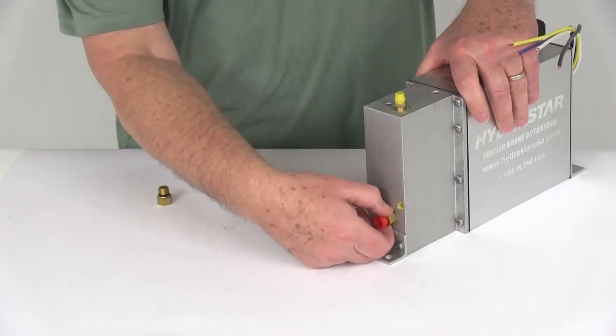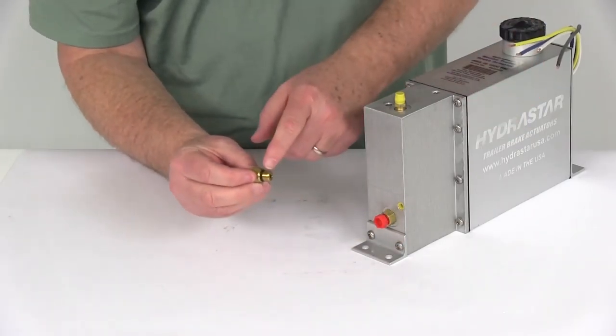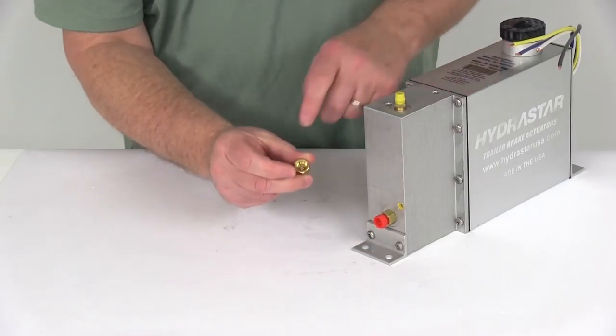If you want to change that out, you just have to get a wrench on there, unscrew that, and then take your quarter-inch adapter and go ahead and screw that on. It comes with the O-ring you can see on there. Screw that in there, and then that will change to quarter-inch lines.